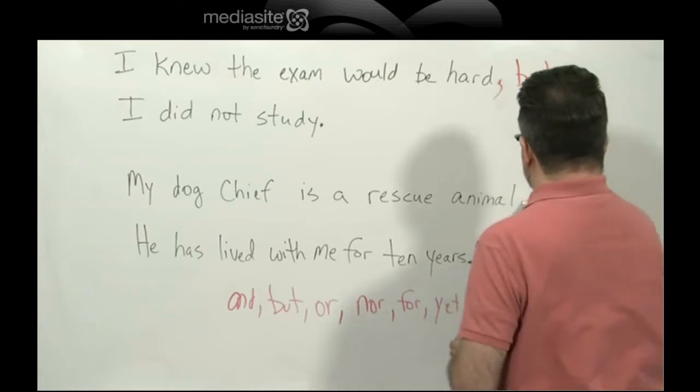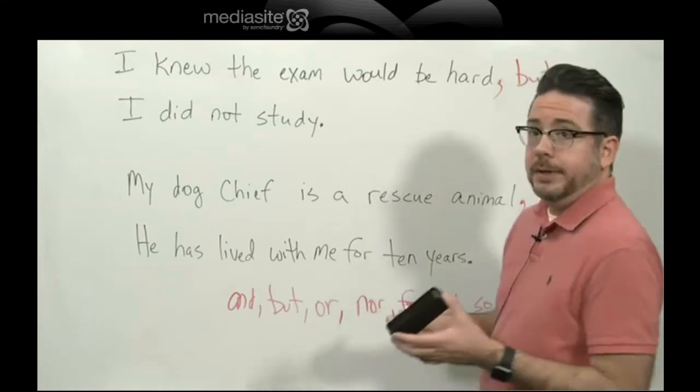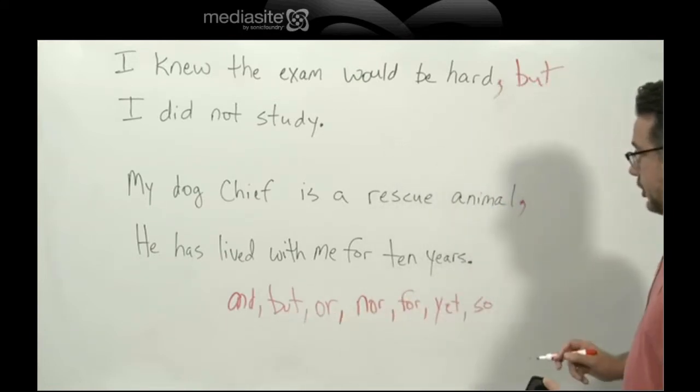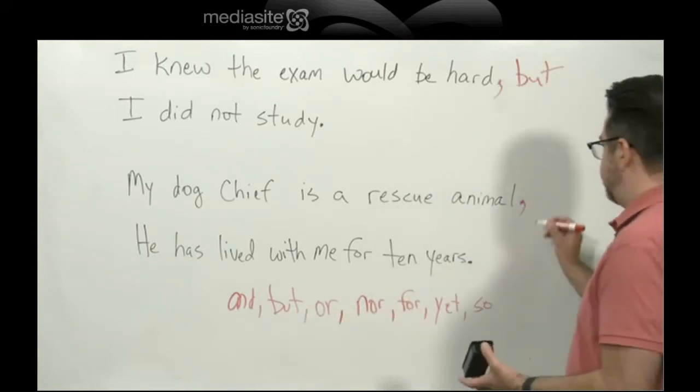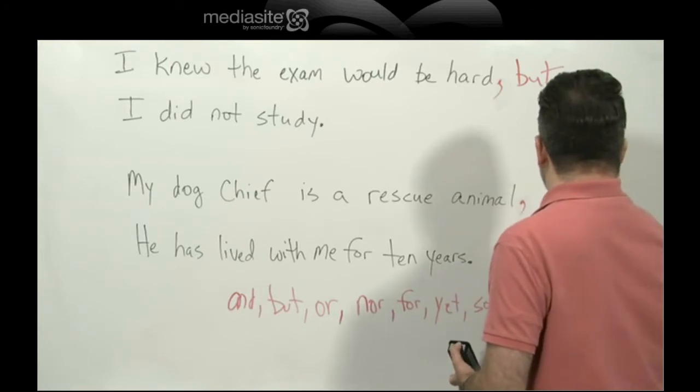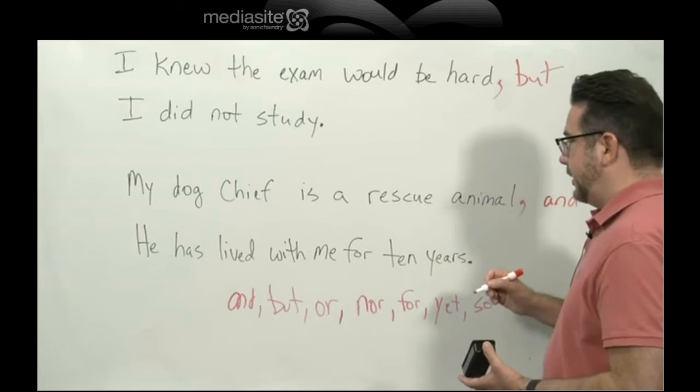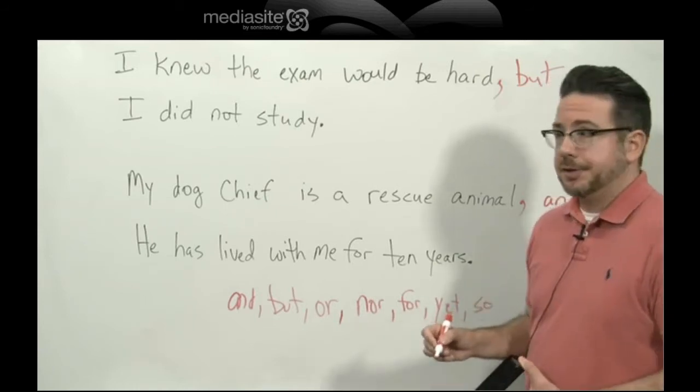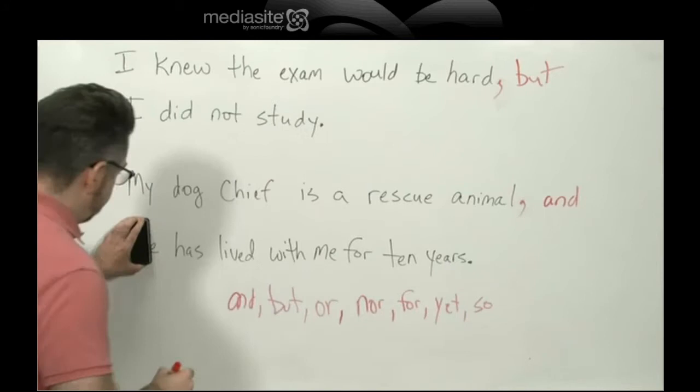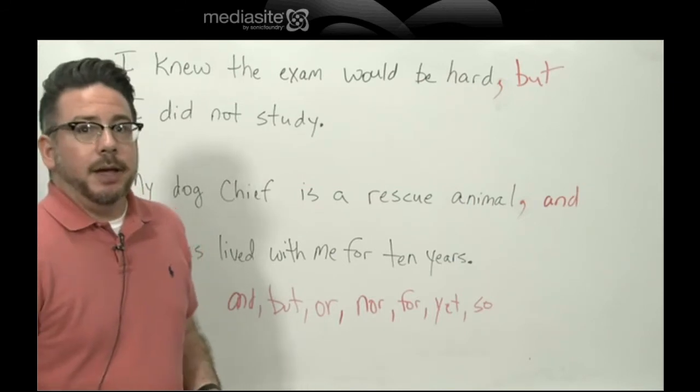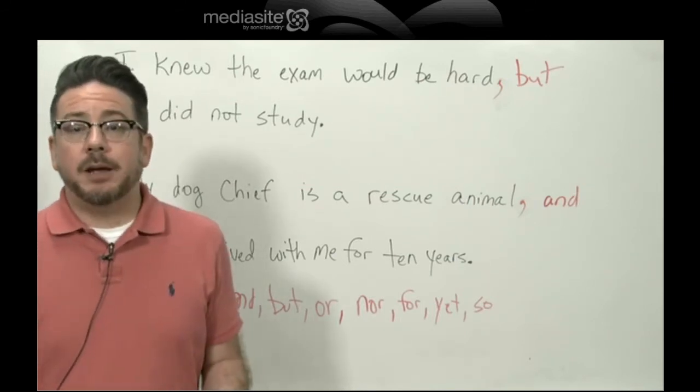erase that period, replace it with a comma, but we don't want this to be a comma splice, so let's pick one of our conjunctions down here. Let's just go with and. My dog Chief is a rescue animal and he has lived with me for ten years. Now also don't forget in this case we would need to change the capitalization, lowercase h in he. And so now we have a compound sentence.